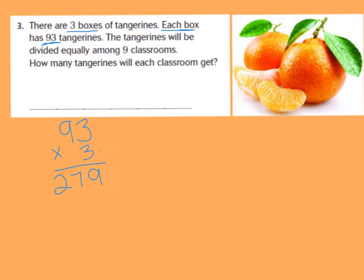Now the rest of the problem reads, the tangerines will be divided equally among the 9 classrooms. So I need to take all my 279 tangerines and divide it into 9. I'm going to choose long division strategy, 279 divided by my 9 classrooms. I need my steps for long division so I can make sure that I'm on track. 9 goes into 2, 0 times. Let's try 9 goes into 27. I know that 9 goes into 27 three times, because 3 times 9 is 27.